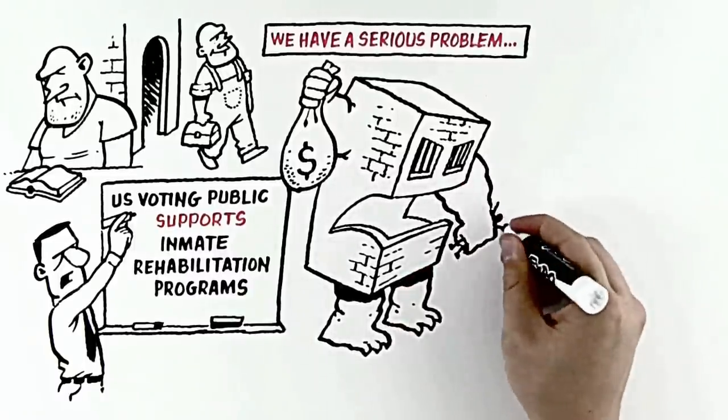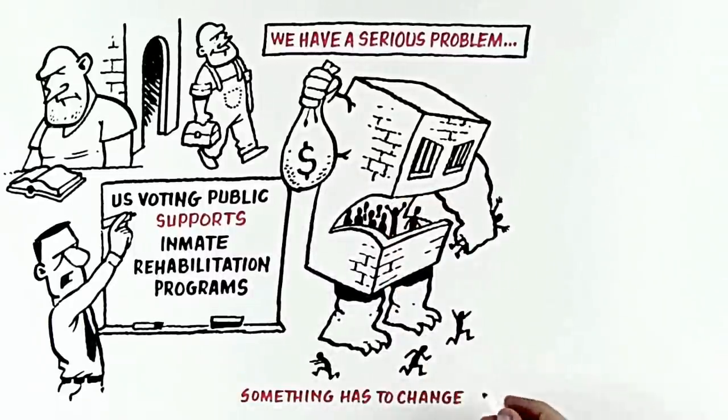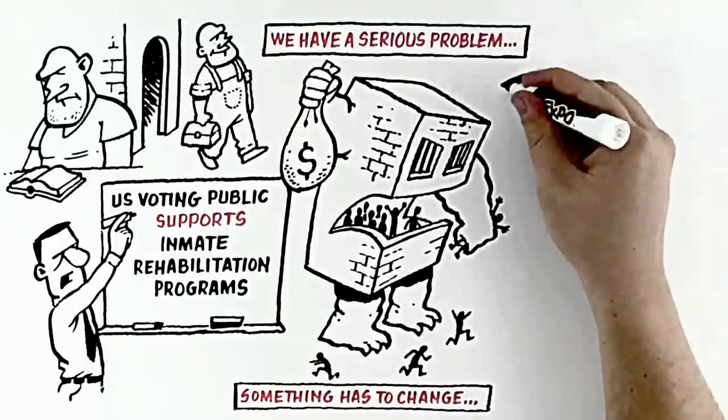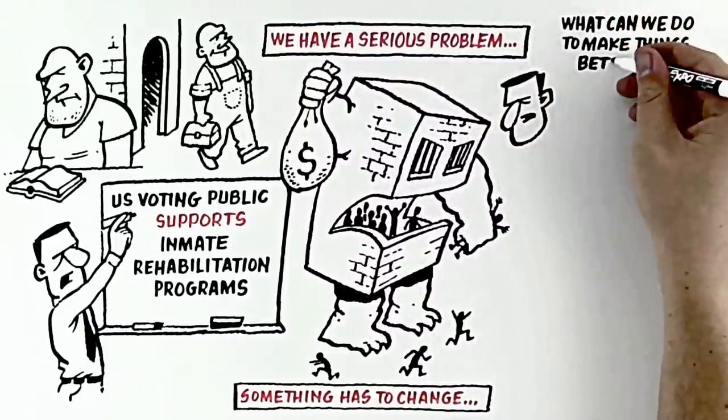We have a serious problem on our hands. A big, expensive correctional system that's growing rapidly, straining our resources, and not giving Americans what they want. We can't go on like this. Something has to change. So here's the $74 billion question: What can we do to make things better?